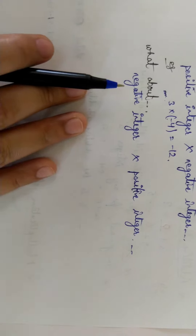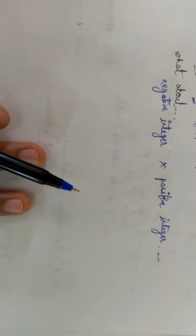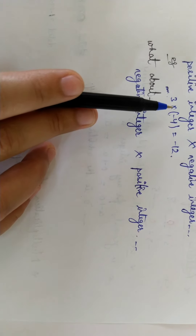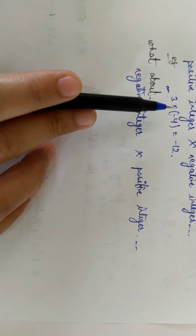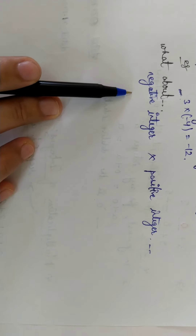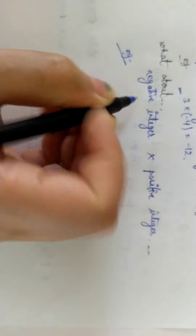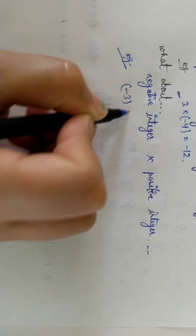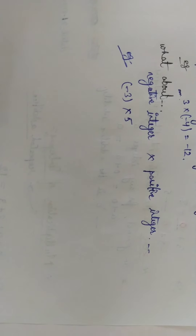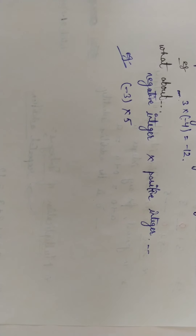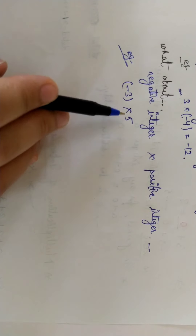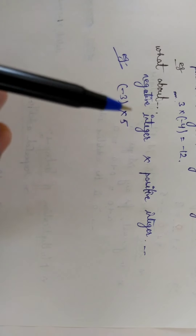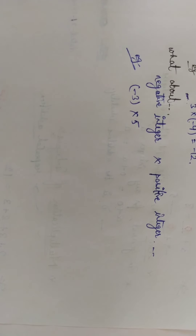Now what about a negative integer multiplied by a positive integer? Taking the example: minus 3 multiplied by 5. Minus 3 times 5 — using commutative property, this is the same as 5 times minus 3. So you have minus 3 repeated 5 times on the number line.